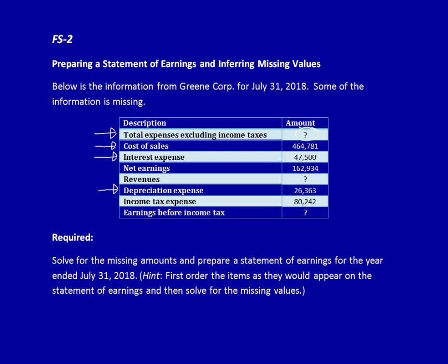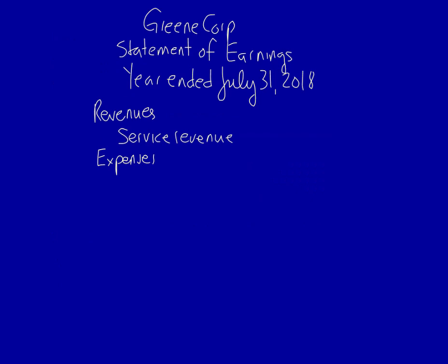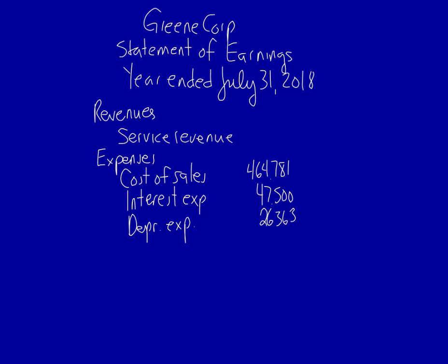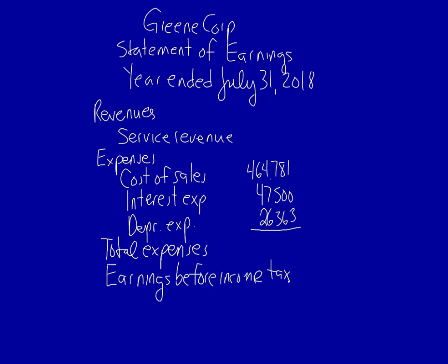Notice that total expenses excluding income tax is not available — we're going to have to calculate it. Let's list the expenses: cost of sales, interest expense. I'll just put total expenses, since it's obvious we exclude income tax. This is an unknown number. Revenues minus total expenses equals earnings before income tax. Then we have income tax expense, and finally net earnings, also called net income or profit.